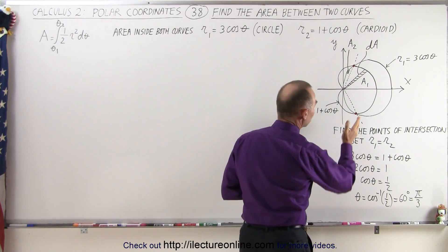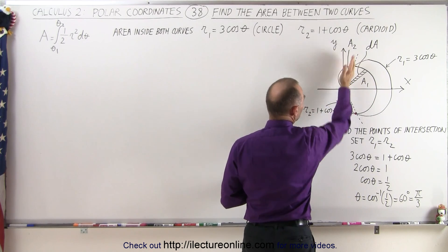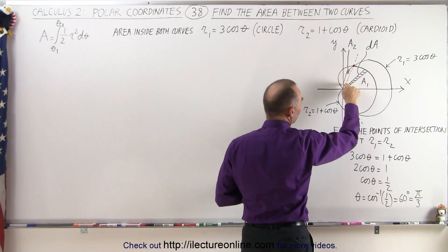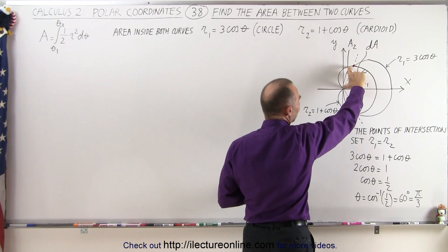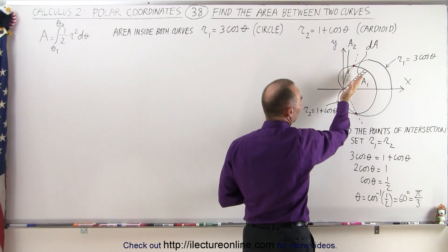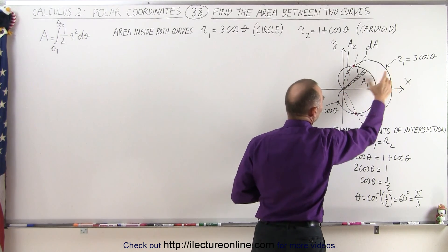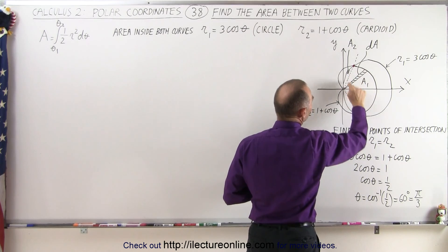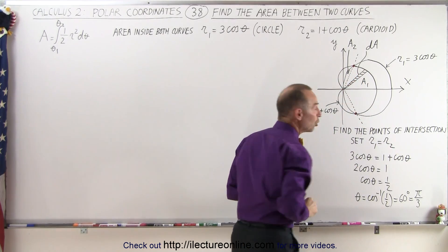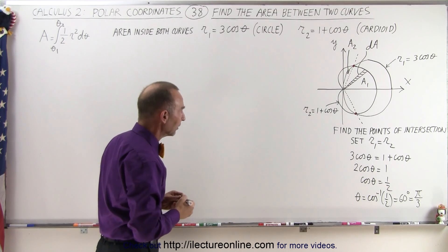We must be careful when we try to find the area. Notice when we find the area from here to this line that goes right to the point of intersection, we still have a small area not accounted for. The limits have to be different because the small area element is confined by the curve R1, while the small area element DA over here is defined by the curve R2. So we do have to have two separate integrals that we're going to add together.